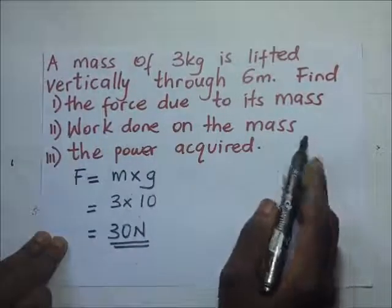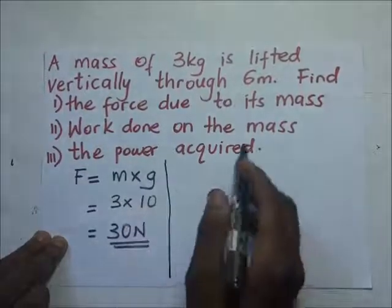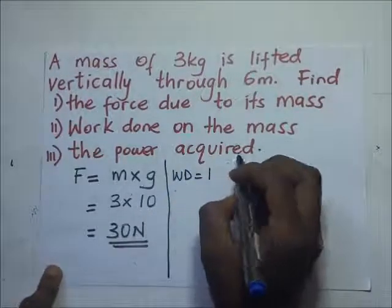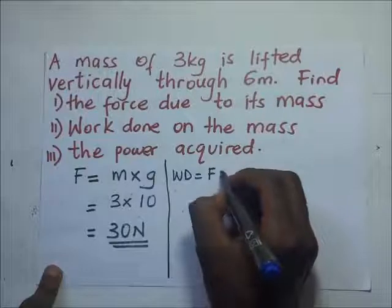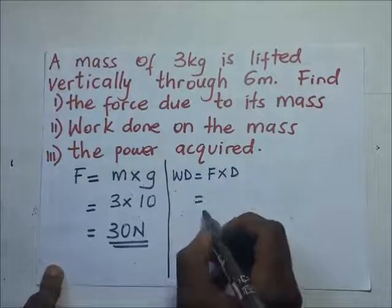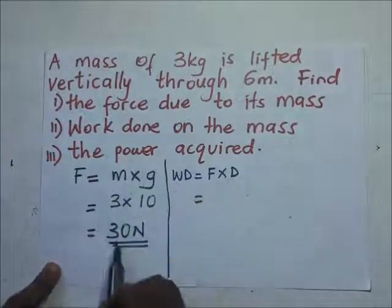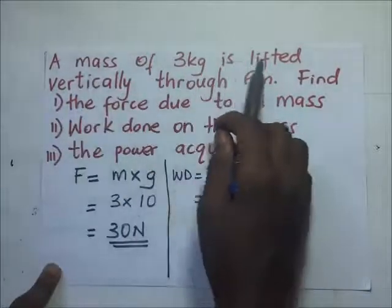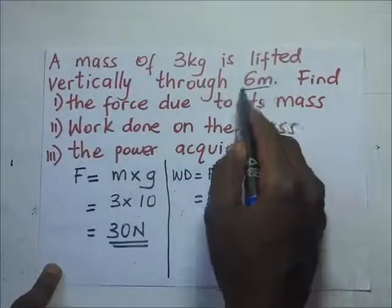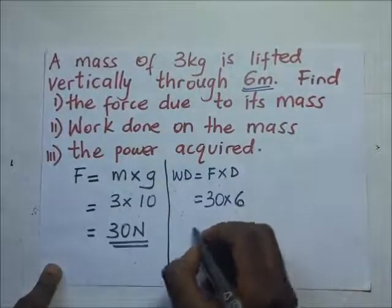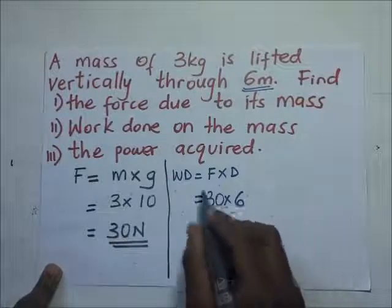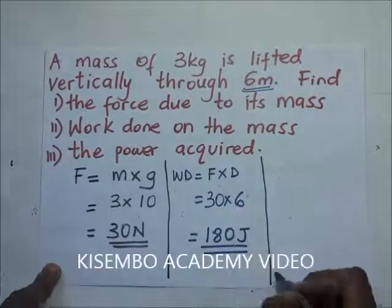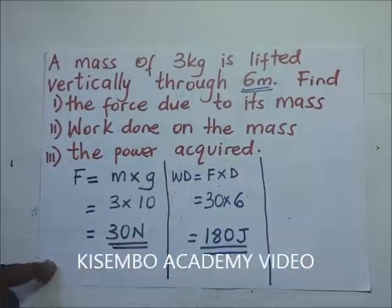Part two: find the work done on the mass. Work done equals force times distance. The force is 30 newtons, and the mass was lifted through 6 meters, so it's 30 times 6, which equals 180 joules.